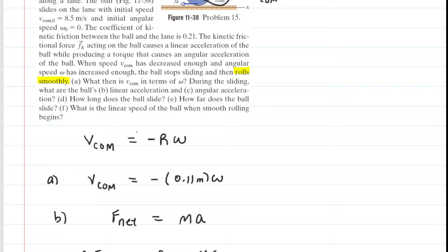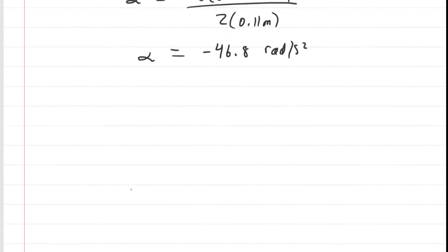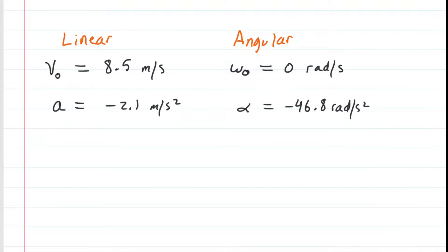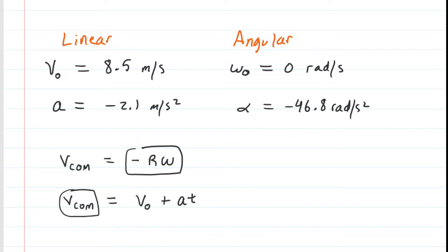In part D, they're asking for the period of time during which the ball slides. Let's write down some known values — dividing them into linear and angular counterparts — and explore the final velocity of the center of mass. We said the final velocity of the center of mass equals negative the radius times the final angular velocity. From kinematics, the final velocity of the center of mass equals the initial velocity of the center of mass plus the linear acceleration multiplied by time. We substitute negative r times omega for the final velocity of the center of mass.